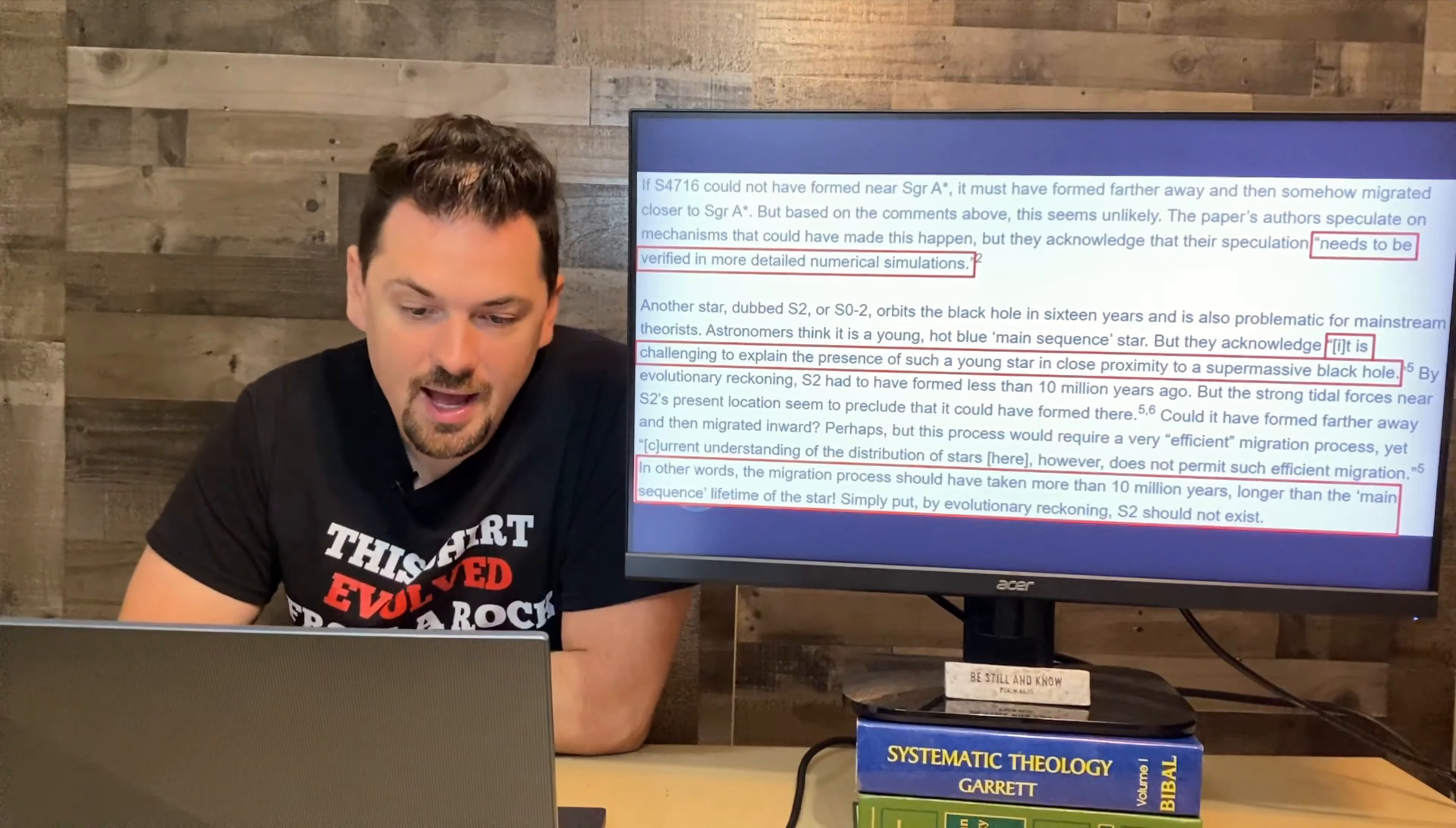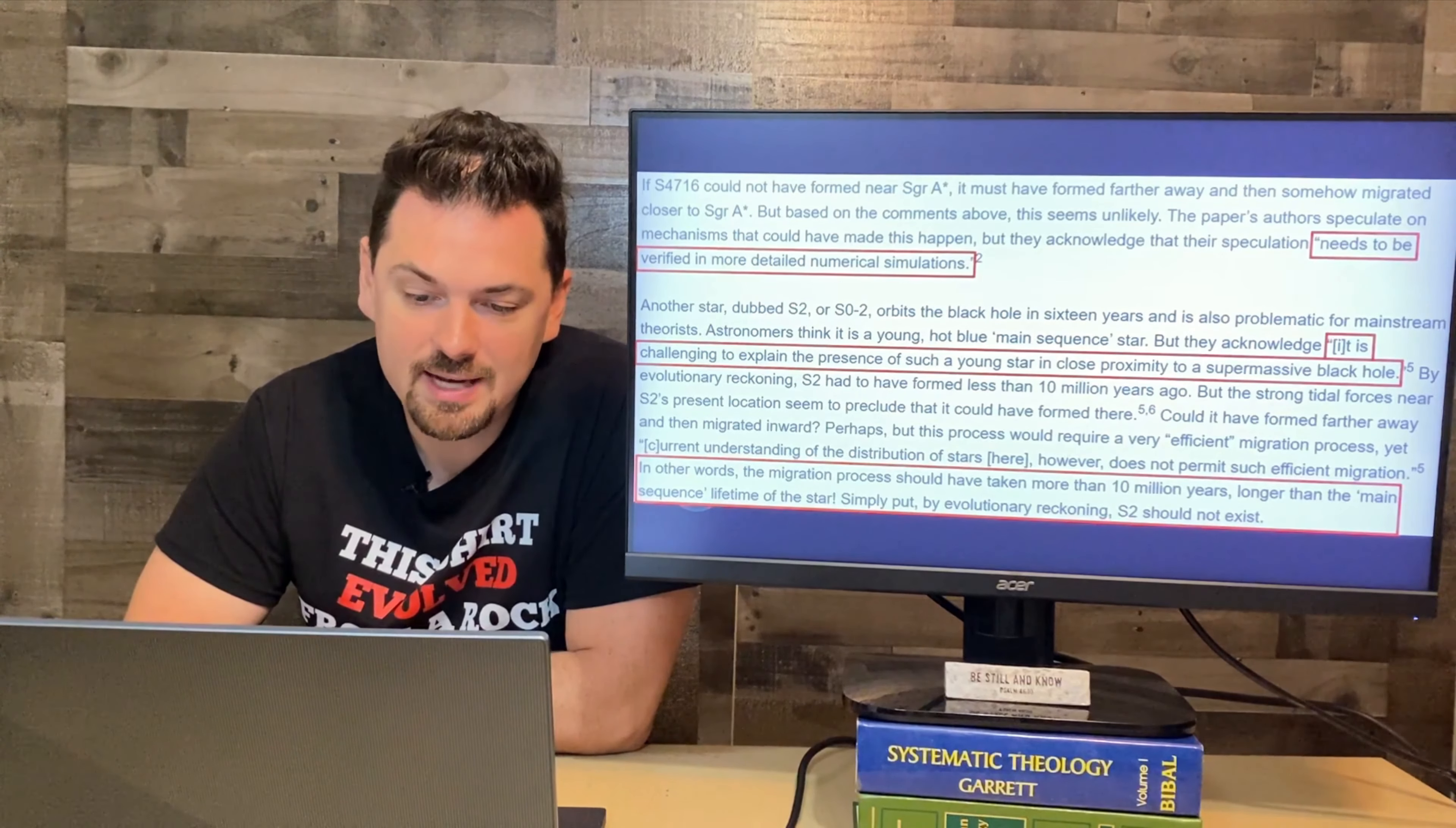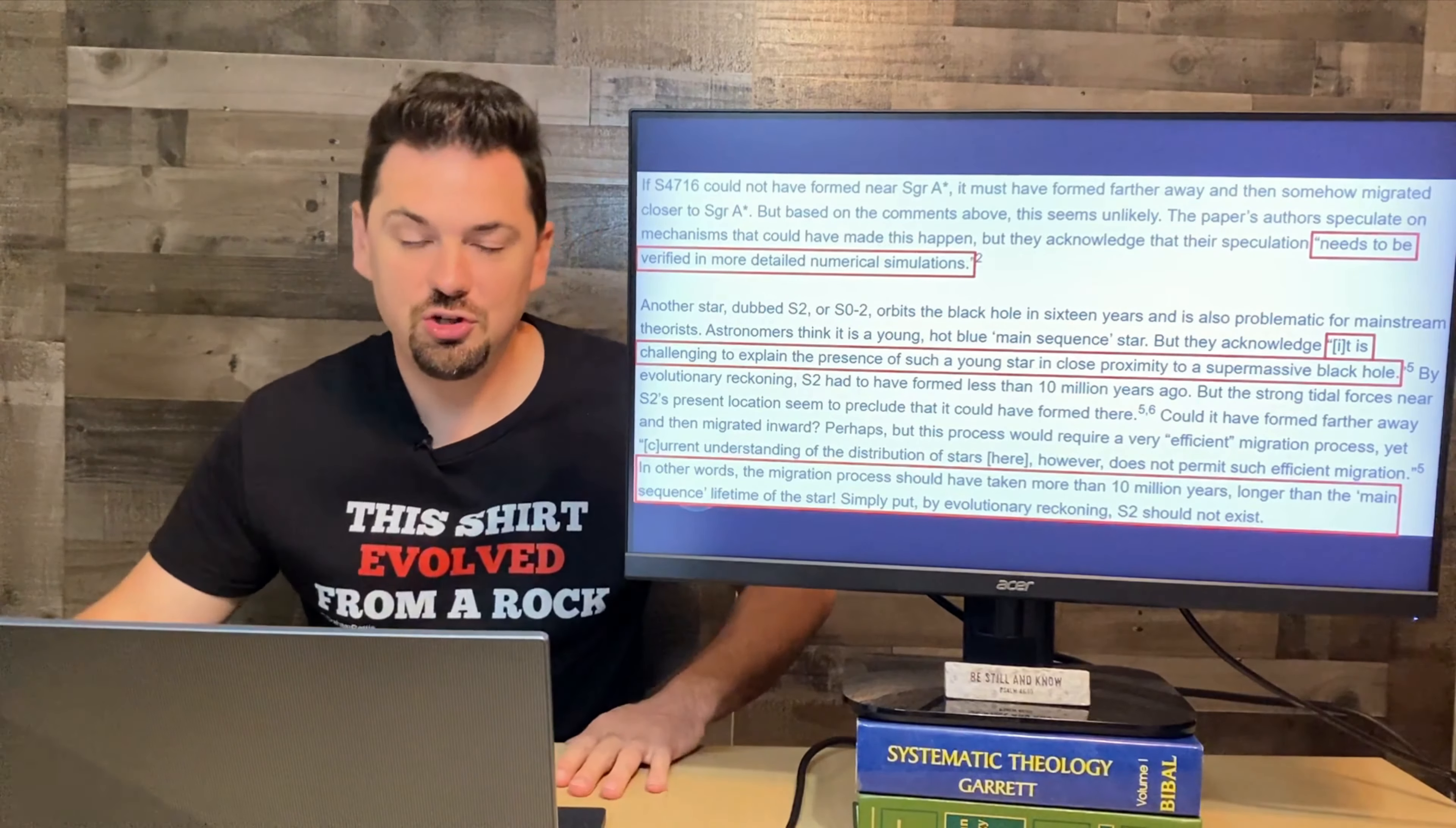Another star dubbed S-2 or S-O-2 orbits the black hole in 16 years and is also problematic for mainstream theorists. Astronomers think it is a young, hot blue main-sequence star. Hmm, young. But they acknowledge it is challenging to explain the presence of such a young star in close proximity to a supermassive black hole. By evolutionary reckoning, S-2 had to have formed less than 10 million years ago. But the strong tidal forces near S-2's present location seem to preclude that it could have been formed there. Could it have formed farther away and then migrated inward? Perhaps. But this process would require a very efficient migration process. Yet current understanding of the distribution of stars does not permit such efficient migration. In other words, the migration process should have taken more than 10 million years, longer than the main-sequence lifetime of the star. Simply put, by evolutionary reckoning, S-2 should not exist.